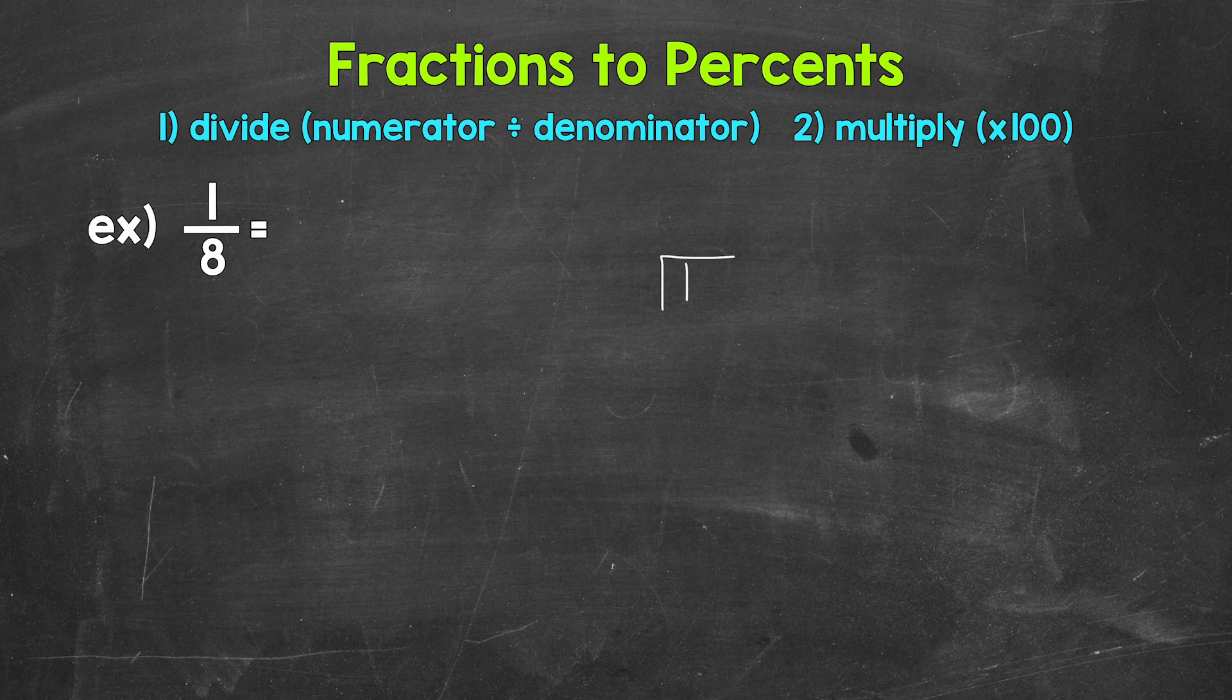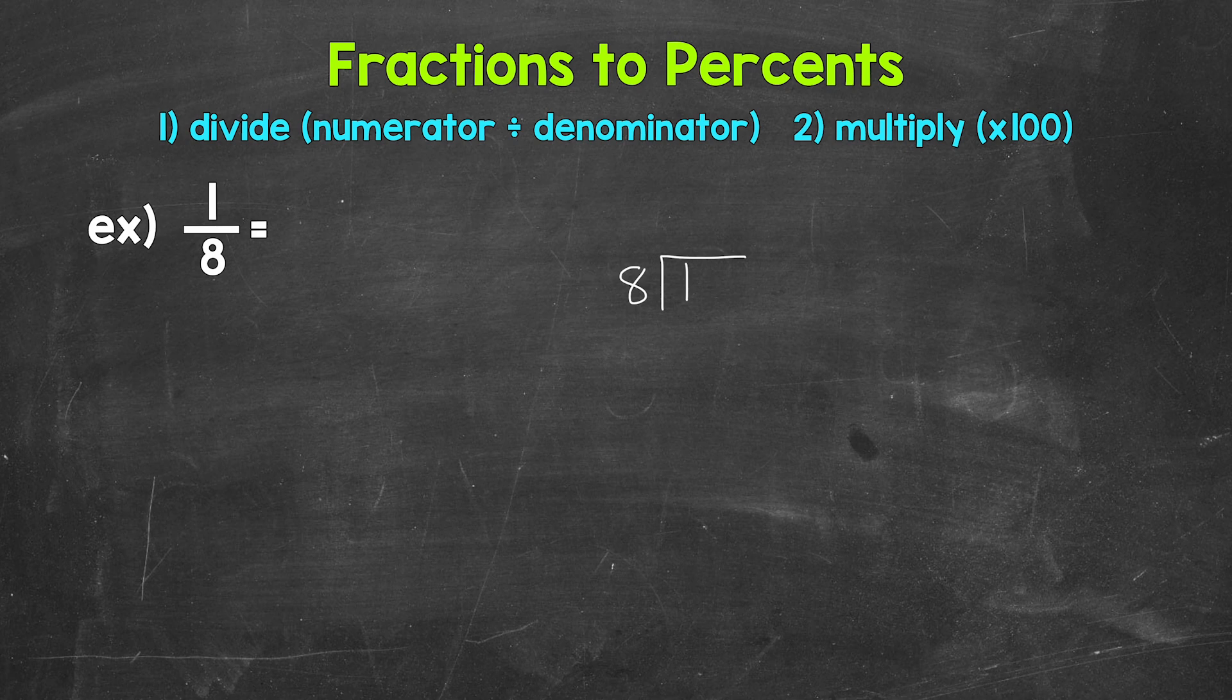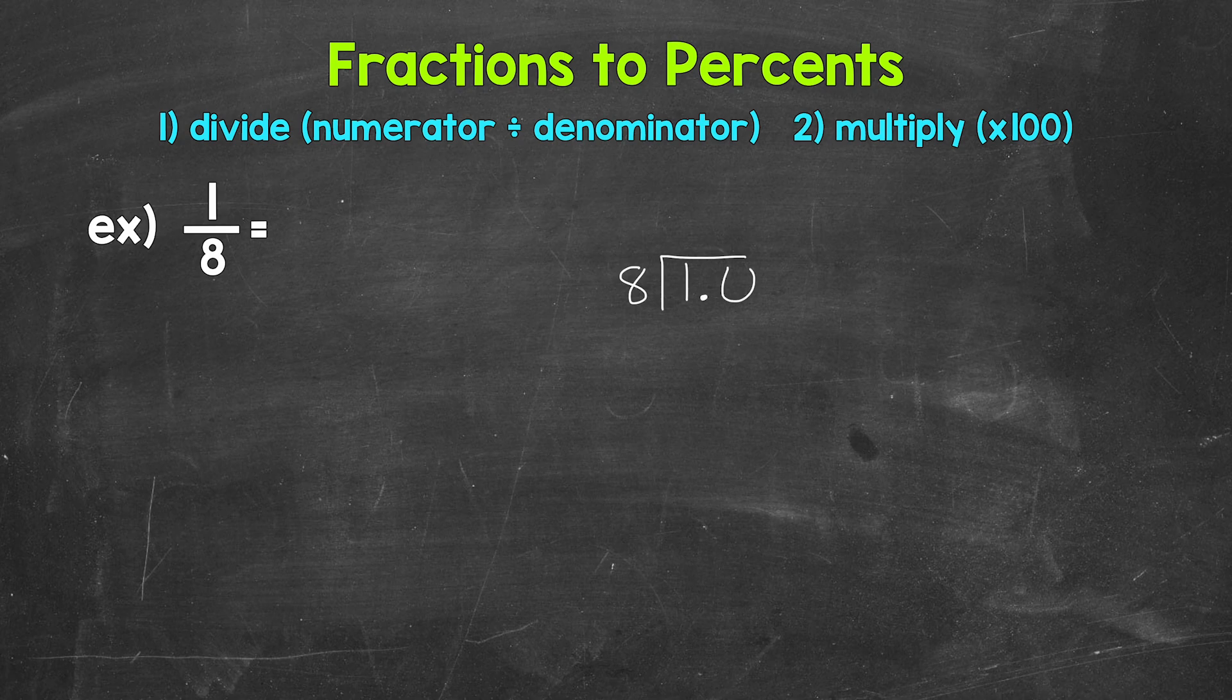So for 1 eighth, we can set this up as 1 divided by 8. And now we can go through the division process. How many whole groups of 8 in 1? We can't do that, so we need to use a decimal and a zero in order to work through this. Once we have that decimal and the zero, we can bring the decimal straight up into where the quotient, the answer, will be.